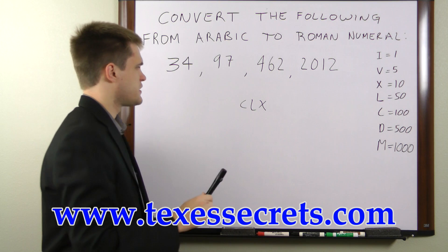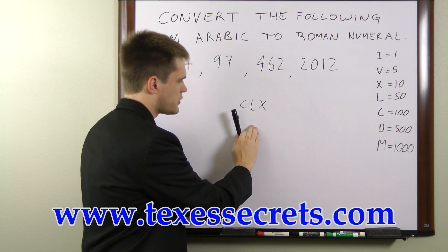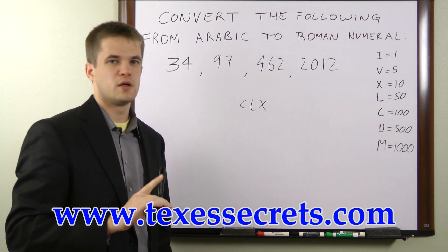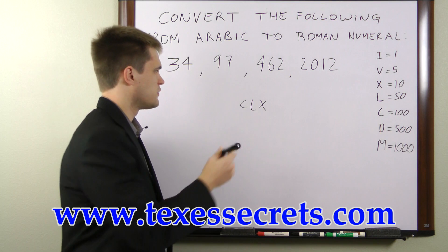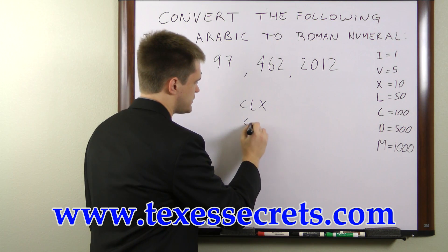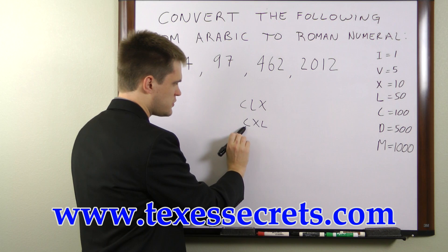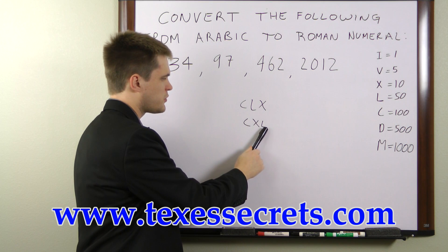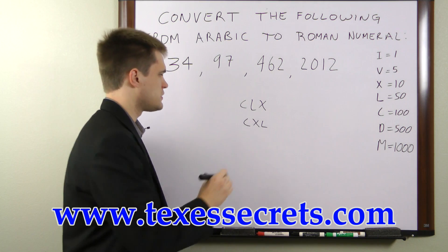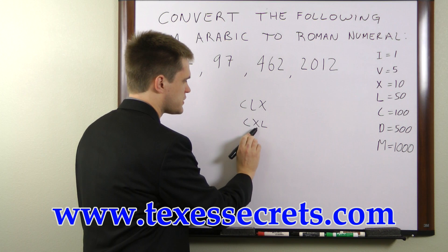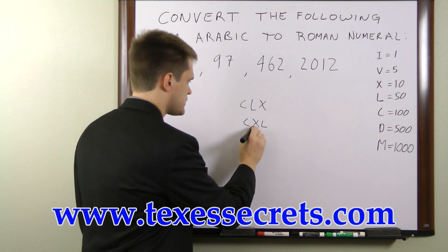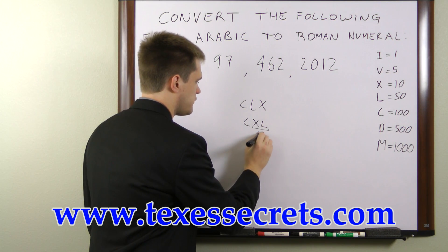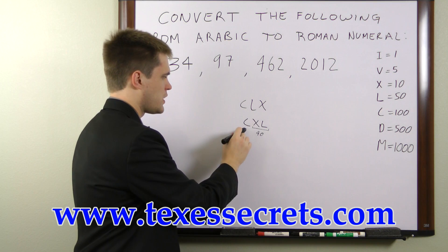The exception is that if you have a higher number, then a lower number, and then a higher number again, you subtract the lower number from the higher number to get a single value that you then add. For instance, if instead of CLX you have CXL, you have 100, 10, 50 — so you've gone down and then back up. You treat the lower number and the next higher number as a single unit: 50 minus 10, or 40. So this number is in fact 100 plus 40.